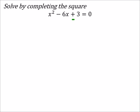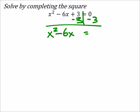Let's go ahead and subtract 3 from both sides. The equal side, so I've got x squared minus 6x equals negative 3.